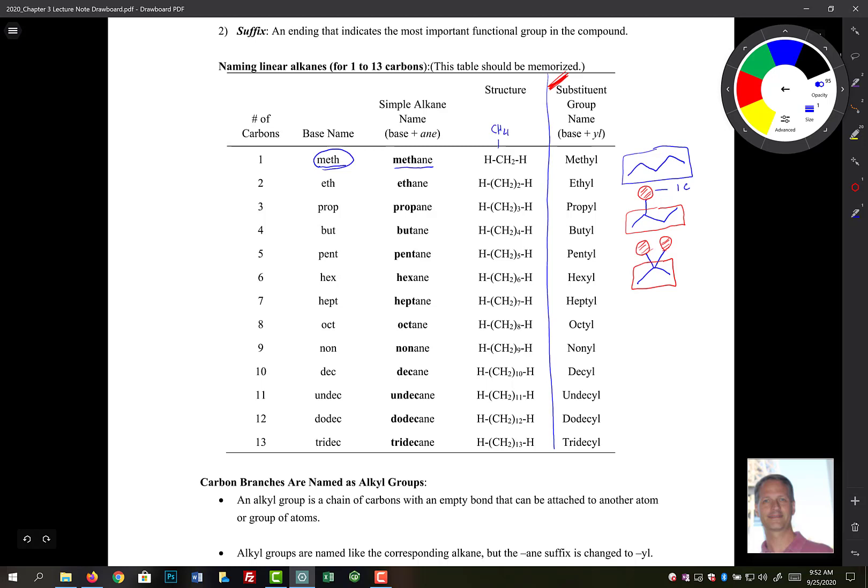So one carbon has a base name of meth. But as a substituent, we don't add the suffix a-n-e, we add the suffix YL. So one carbon is a methyl. And here we have two methyls.